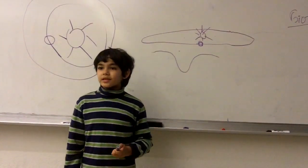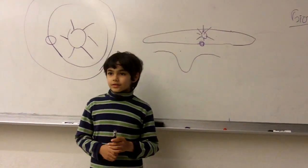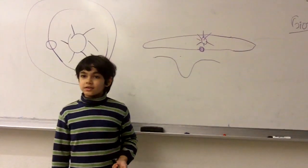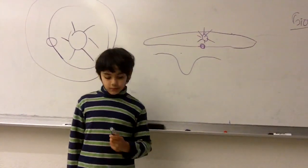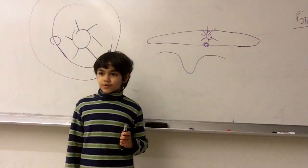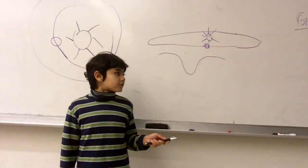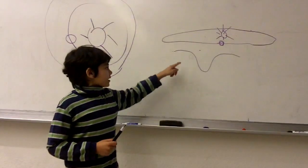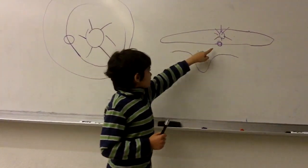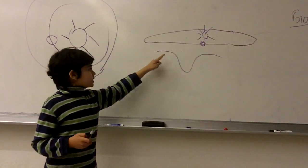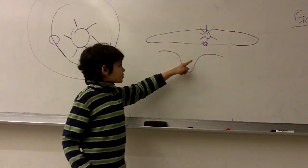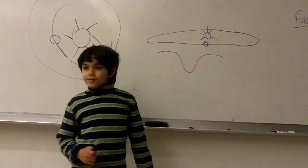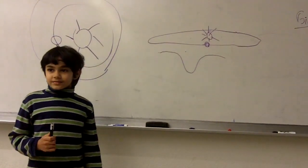Through asteroseismology, they find star quakes or oscillations, and then they can get information about Kepler-10b. They also use the transit method — when a planet crosses the star, there's a dip in brightness, and when the planet goes back, it returns to an ordinary level. So it's like an eclipse, kind of.